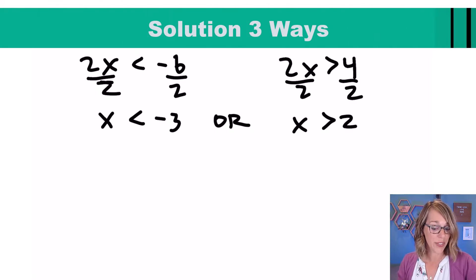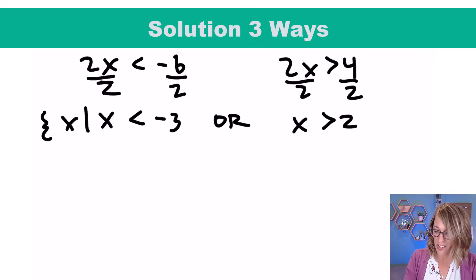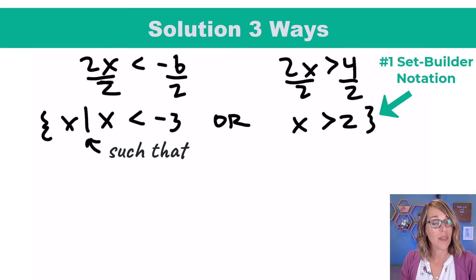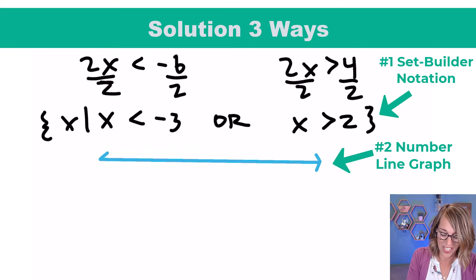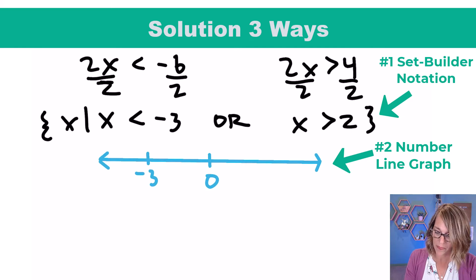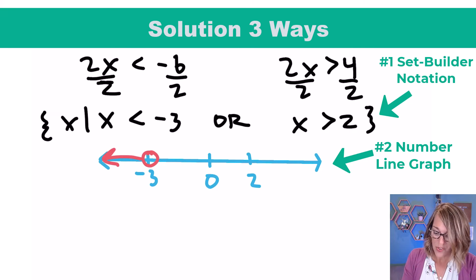Now I can express this using set builder notation — I would put set brackets, x, and then a bar for 'such that.' That little bar means such that. I could also express this on a number line, depending on what your teacher is asking for. Let's say that zero is here in the middle, and I'm going to be less than negative three — so negative three might be about there — and greater than two, so two might be about there. I describe these as: less than negative three, not at negative three, so I put an open circle and everything less than; and greater than two, again an open circle and everything greater than.